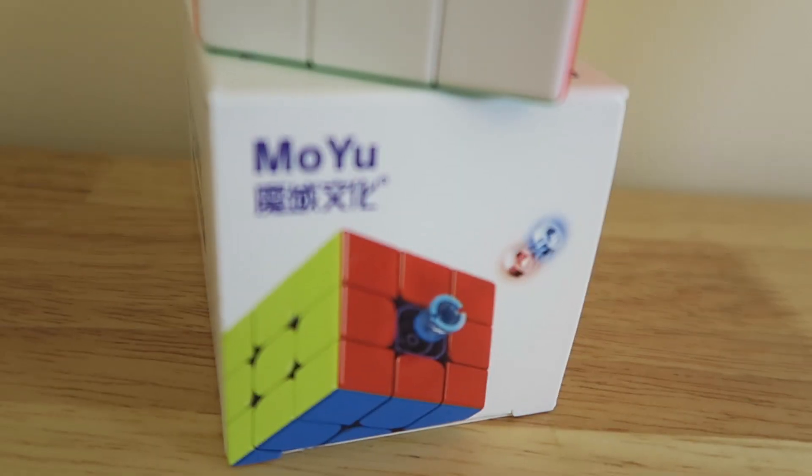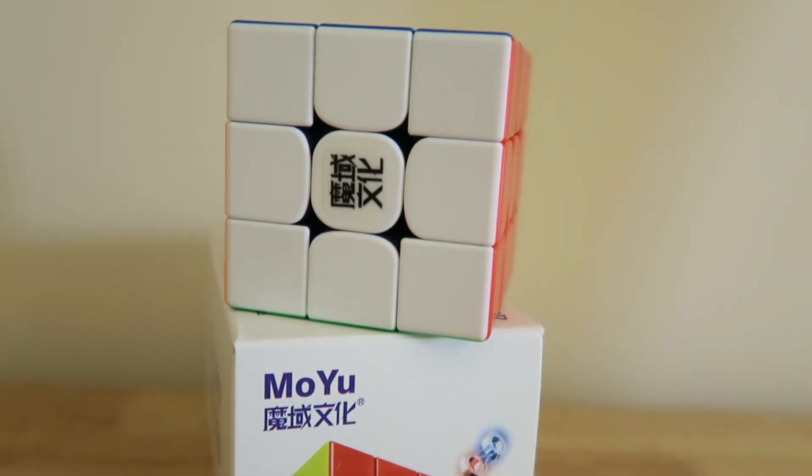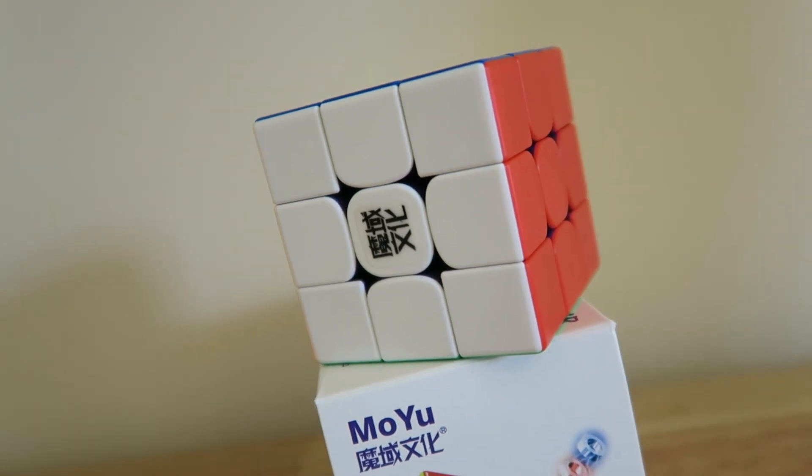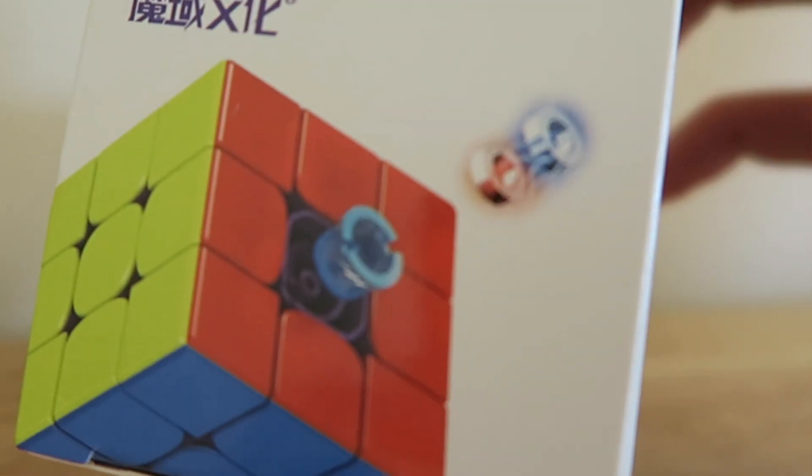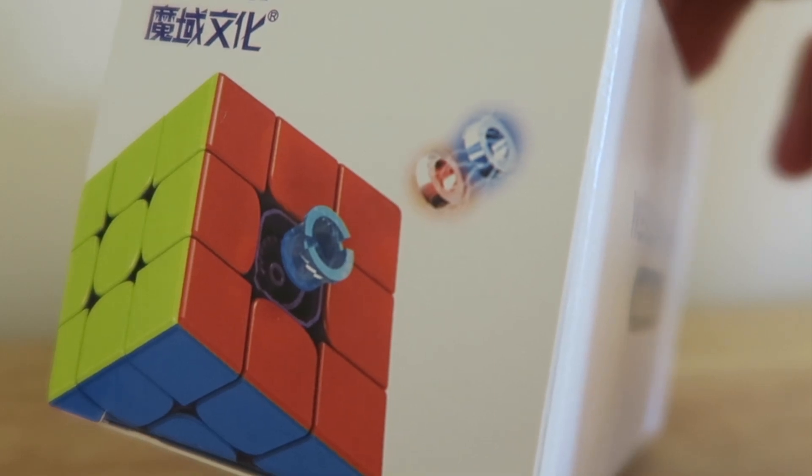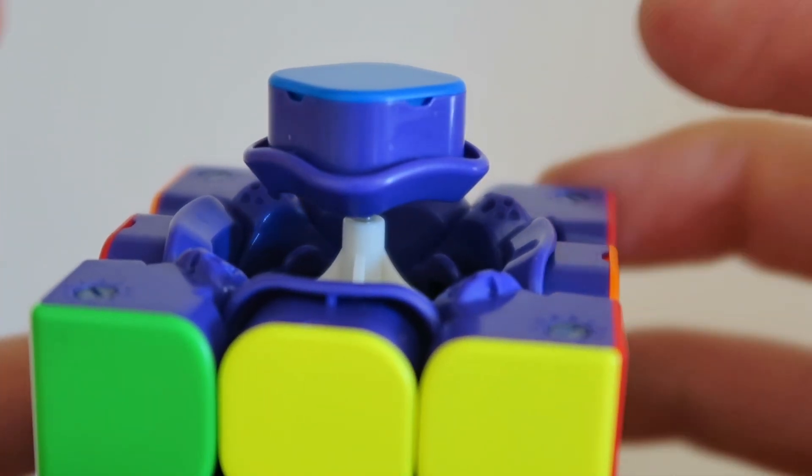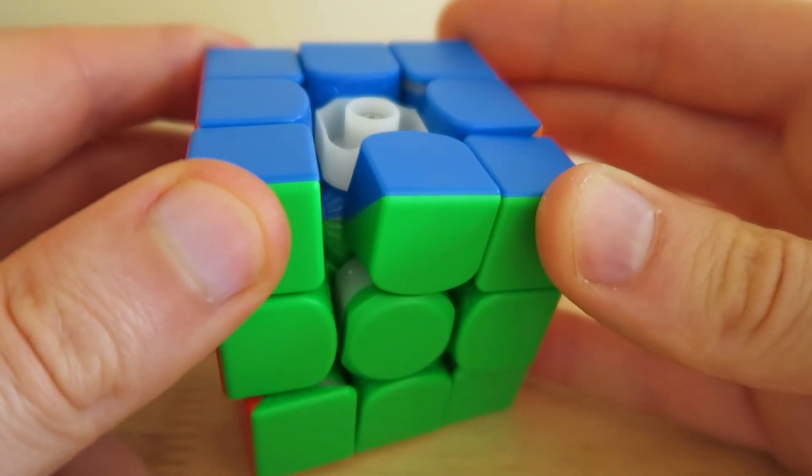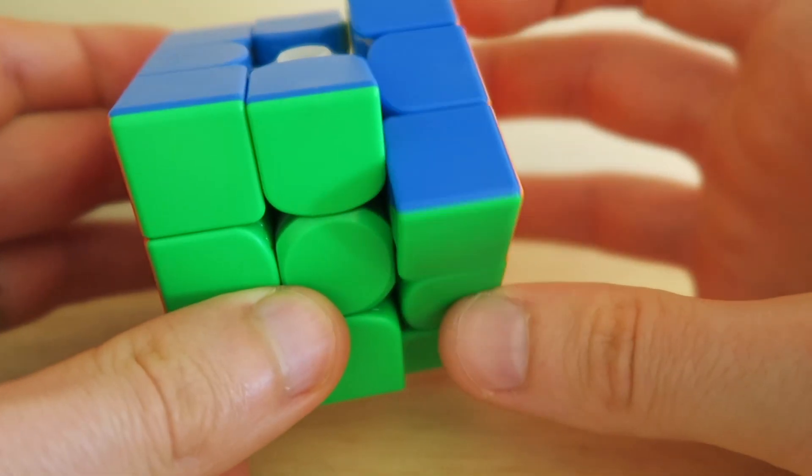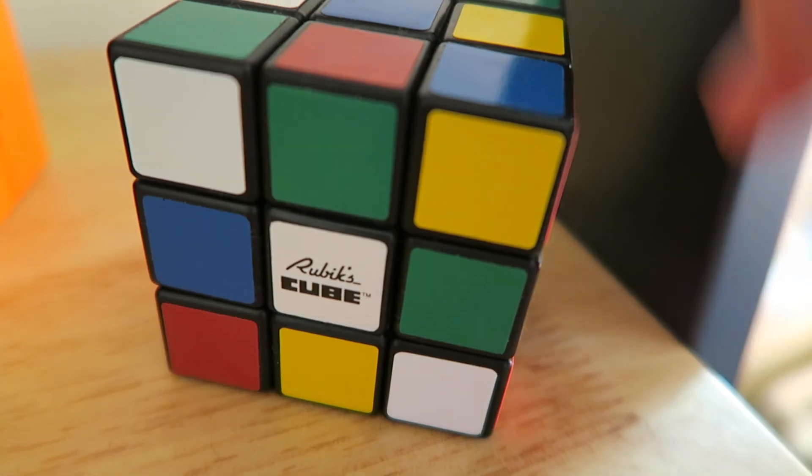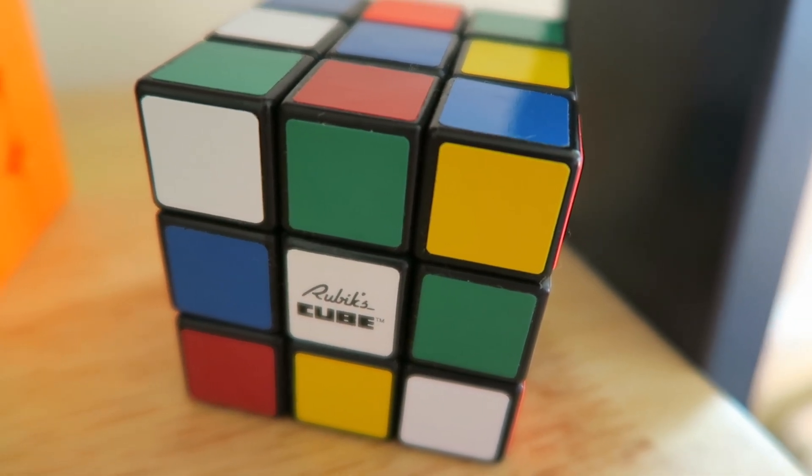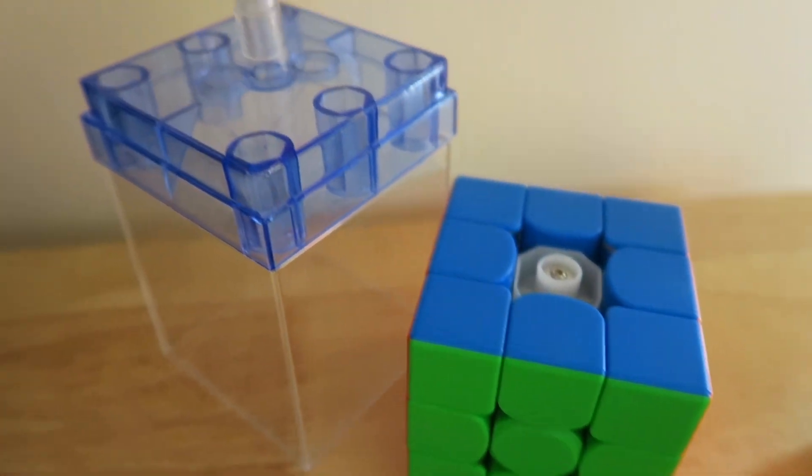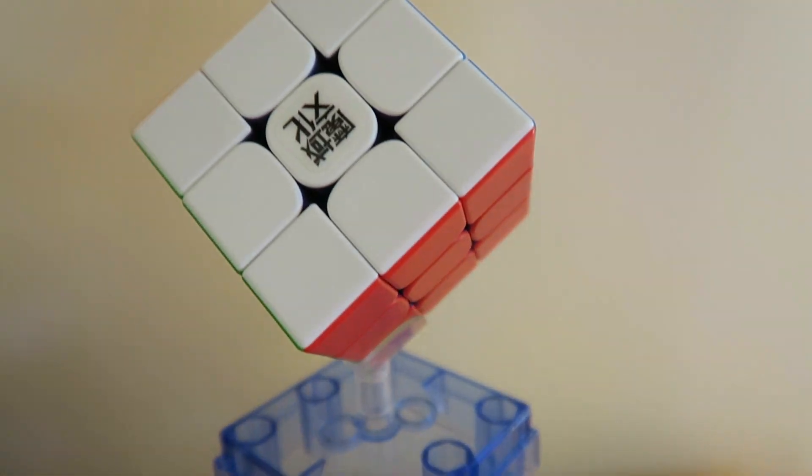The thing that's drawn me to this puzzle is the aptly named Maglev function. For those that don't know, this cube does not contain springs between the core and the centerpieces. This puzzle makes use of the repelling forces of magnets to create tension between the core and the center. Whereas the traditional cube uses the elastic force created by a coiled spring to create tension, this puzzle uses magnets instead. The attractive forces of magnets have been commonplace in speedcubes for a while now, but it's really interesting to see the opposite being the case here. I'm really intrigued and excited to check this out.